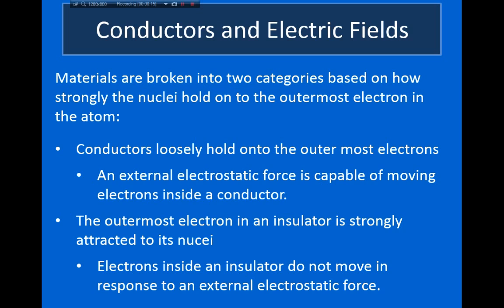A conductor is a material whose atoms only very loosely hold on to the outermost electron. And because these atoms are only loosely holding on to the outermost electron, when you place a conductor inside an electric field, that outermost electron can actually wander away from the atom and be pushed around by this external electric field.